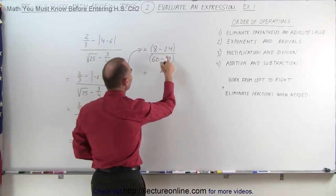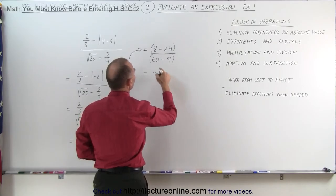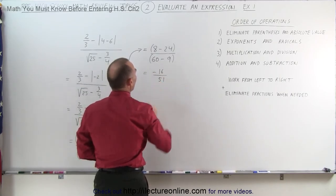So this becomes 8 minus 24, which is a minus 16, divided by 60 minus 9, which is a positive 51.